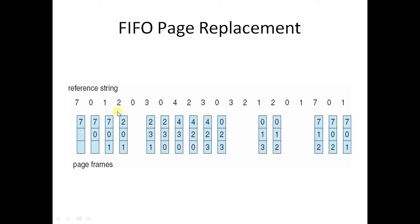Now we encounter 2. Since 2 is not present in our frame, we use the first-in-first-out algorithm. So 7 will be removed and 2 will be entered in its position — 2 has been entered. Next, we see the character is 0, and 0 is already present, so that will be a hit. Since it is a hit, we have not drawn anything new here.